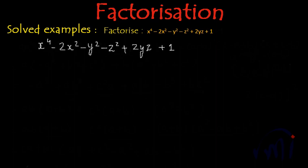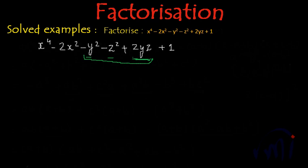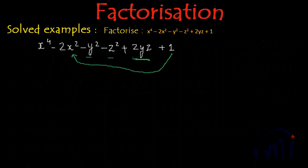If we look at this properly, there is a term with yz. So I think the terms with y squared, z squared, and 2yz are related. Let's write them together. And this 1, I think is related to the other terms. So let us rewrite this expression.